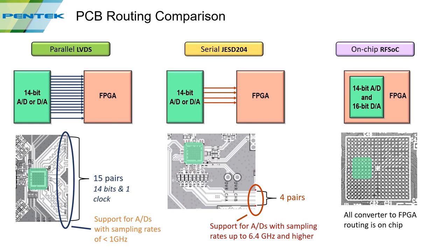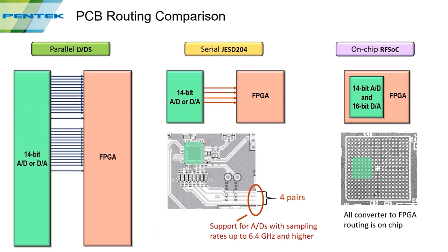Returning to the parallel interface — while parallel interfaces top out at around 1 GHz, ADCs running up to 6.4 GHz using parallel interfaces handle the higher rates by transferring data over multiple interfaces. The 6.4 GHz ADC actually has four sets of interfaces. This becomes a PCB routing challenge because you have so many matched lines, especially in applications with tight space constraints.